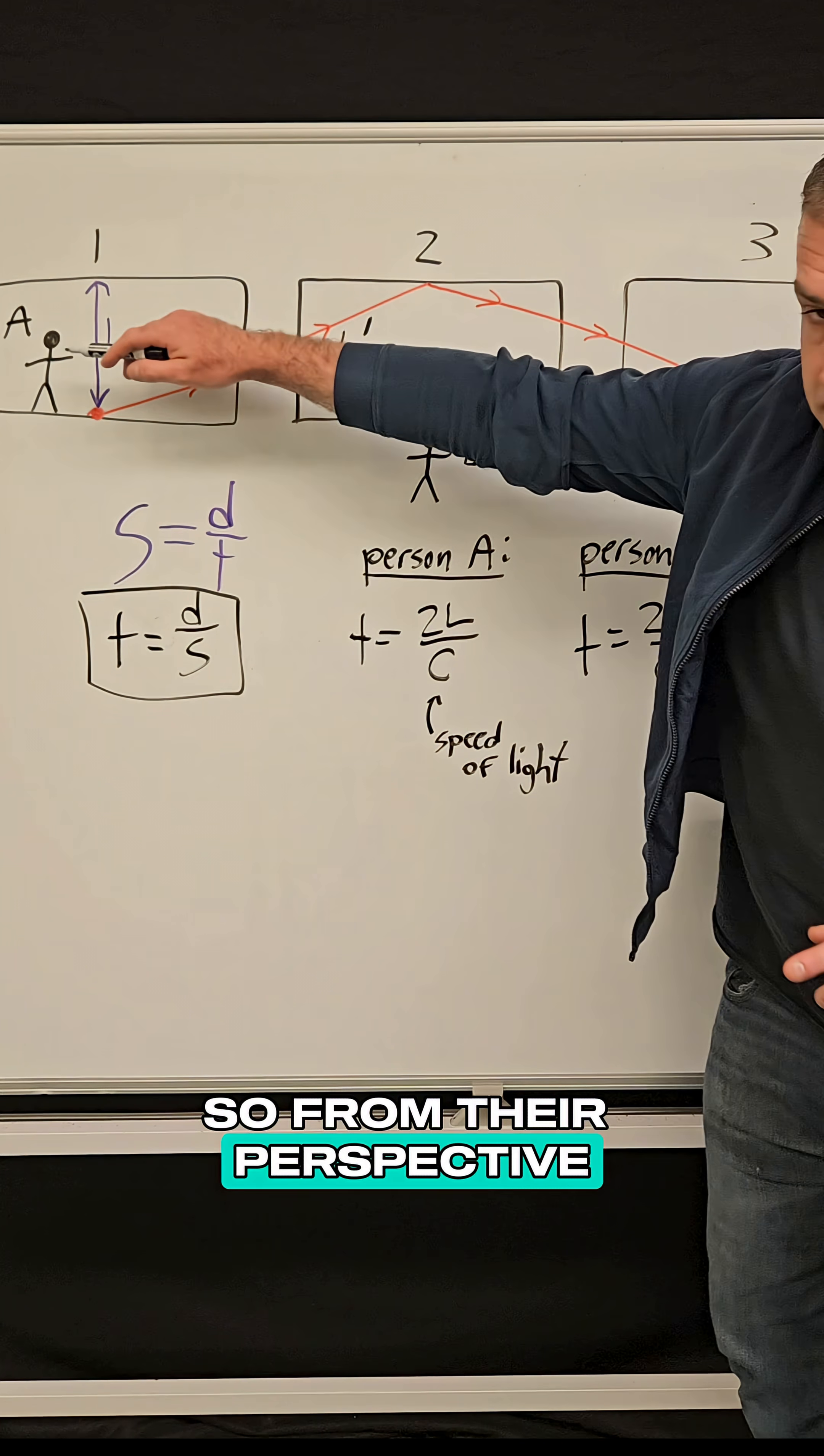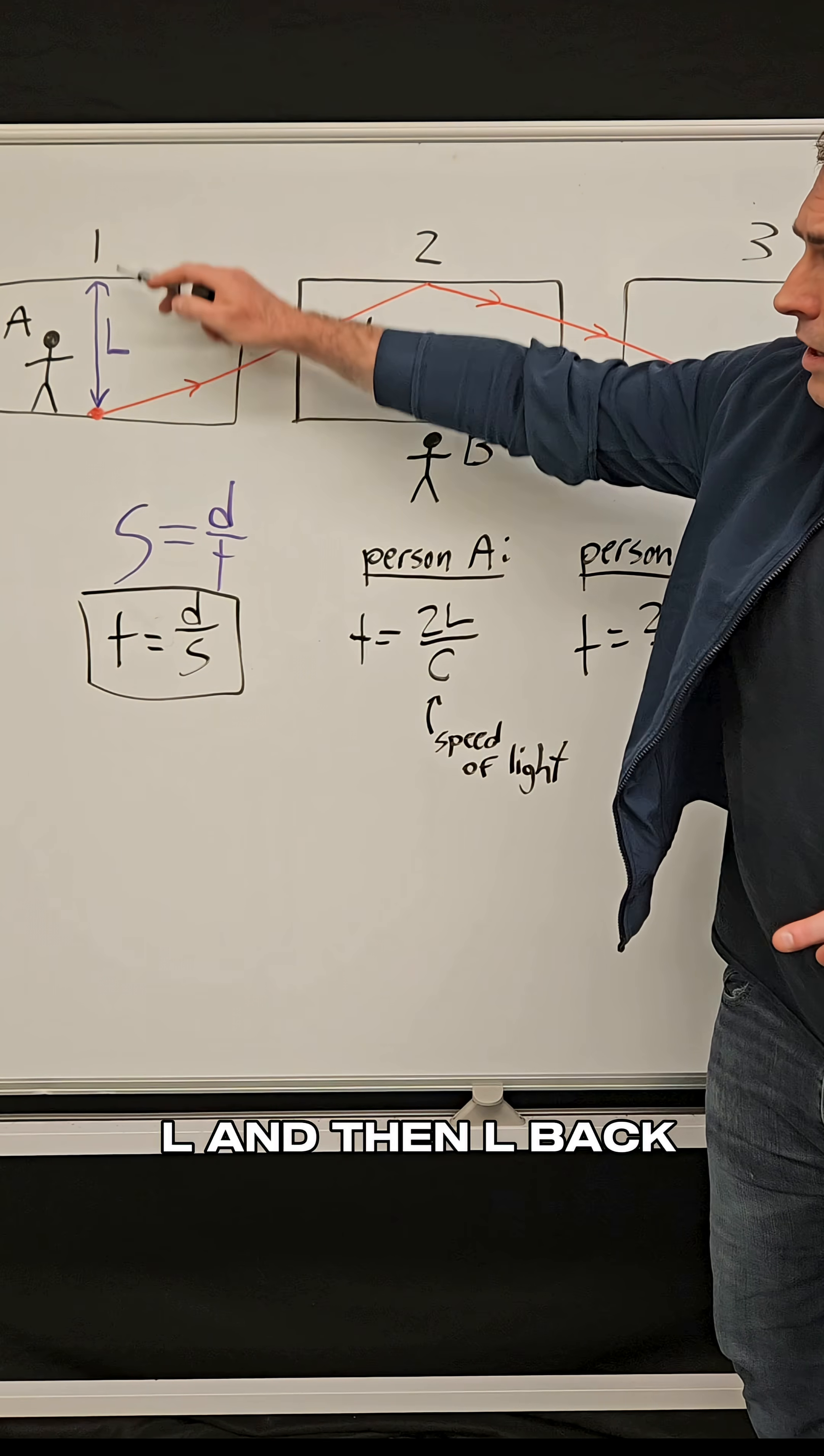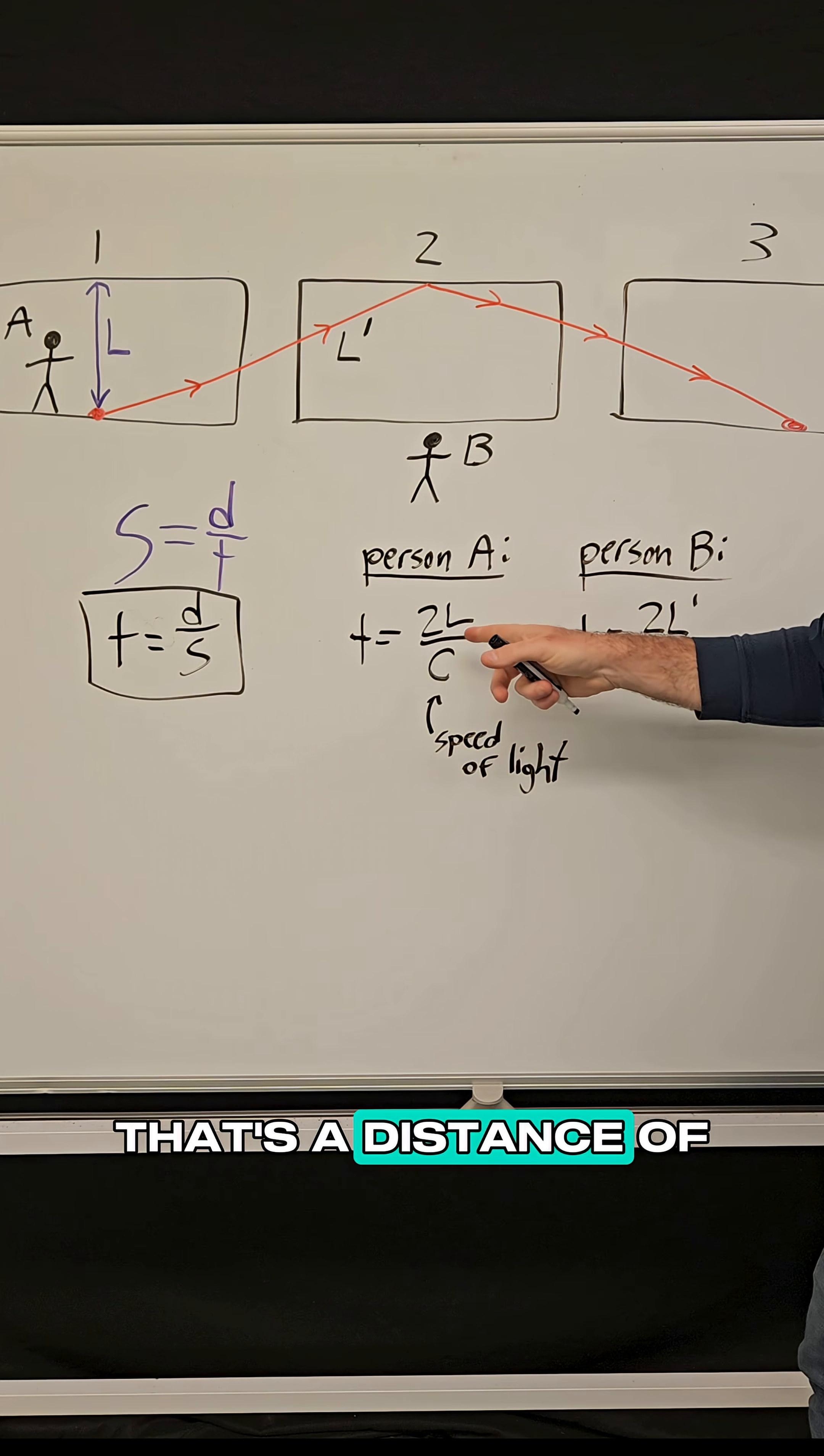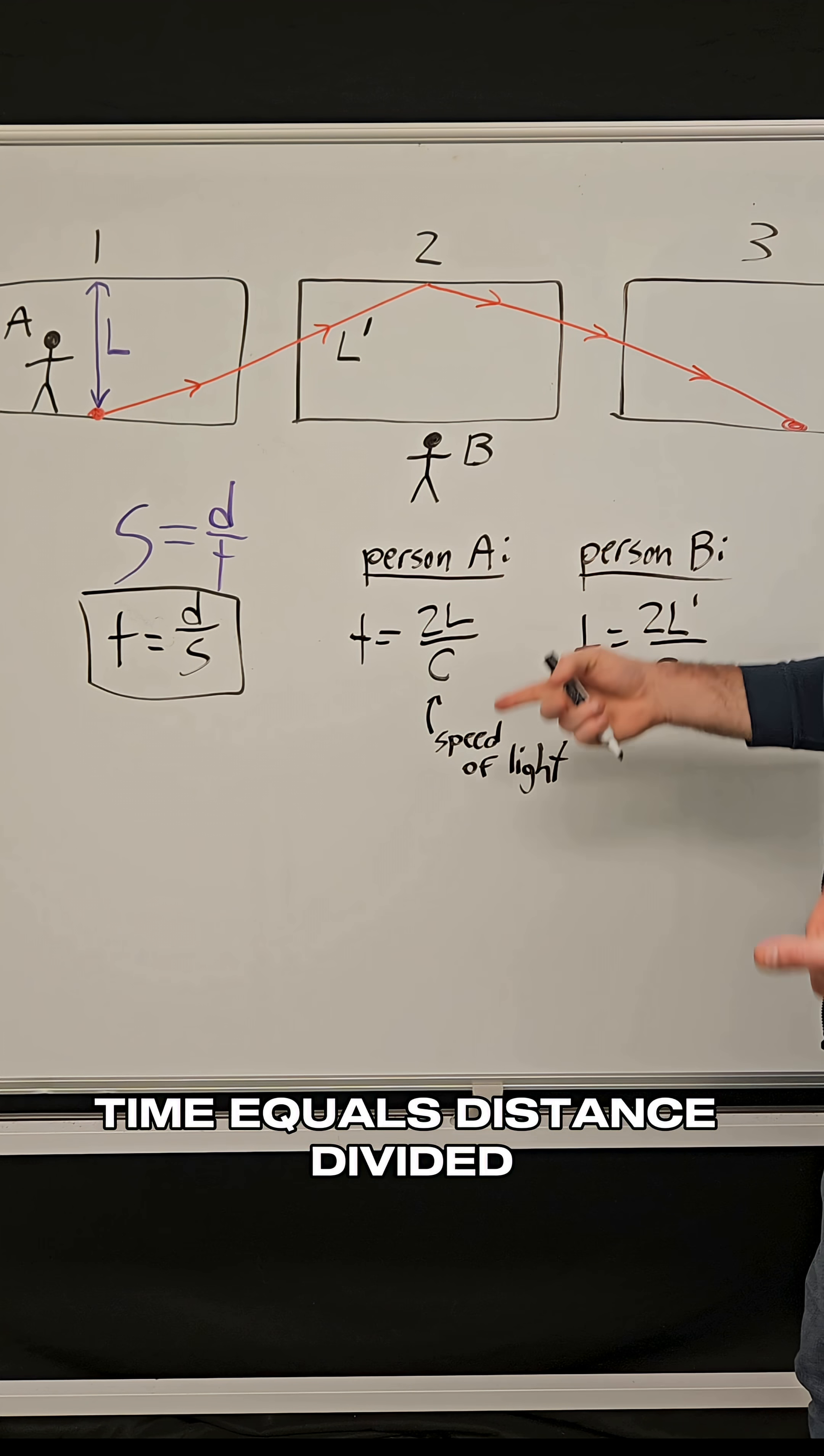So from their perspective, the person on the car, the distance is L and then L back. The laser had to go up, hit the ceiling and come back again. So that's a distance of two L divided by the speed of light. Time equals distance divided by speed.